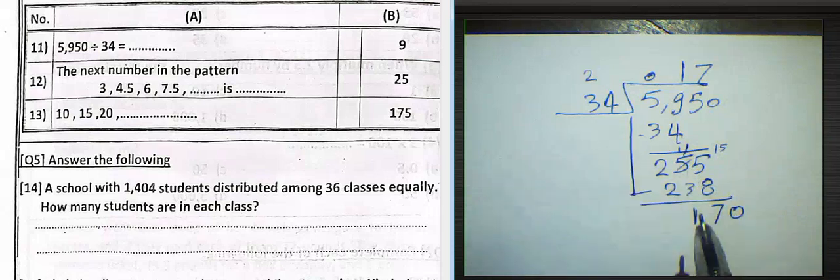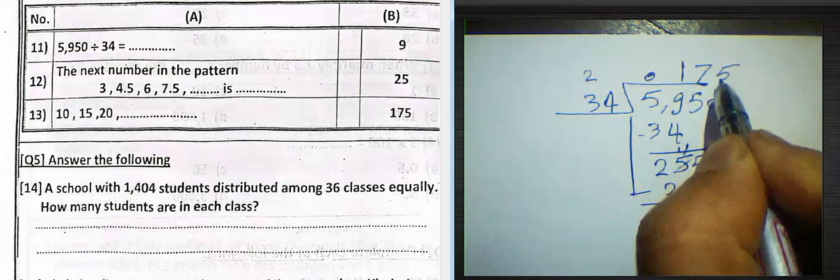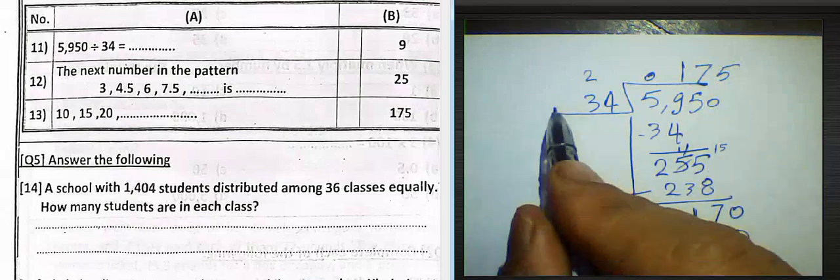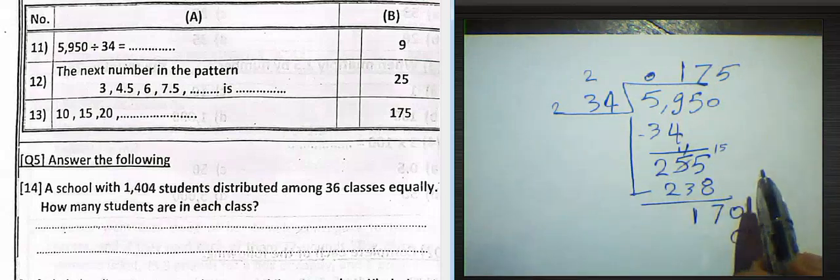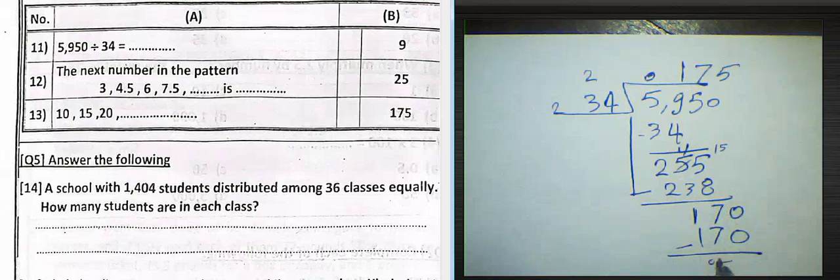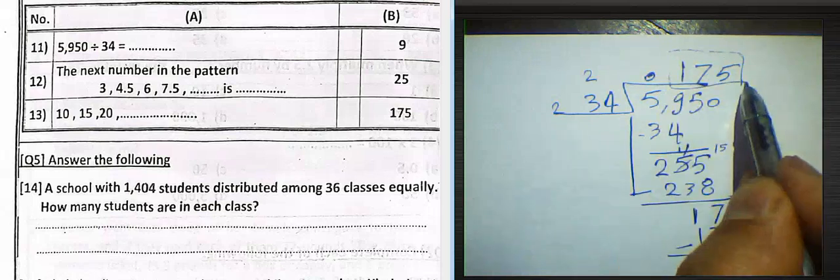170 divided by 34 equals 5. 5 times 4 equals 20. 0 and carry up 2. 3 times 5, 15 plus 2 equals 17. So the result will be 175.